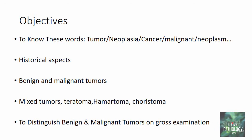The learning outcomes of today's tutorial will be: we will know these words — tumor, neoplasia, cancer, malignant neoplasm — and we will understand a bit about the historical aspects of cancer. We will know what benign tumors are, what malignant tumors are, and what mixed tumors, teratomas, hamartomas, and choristomas are, and finally the differences between benign and malignant tumors on gross examination.